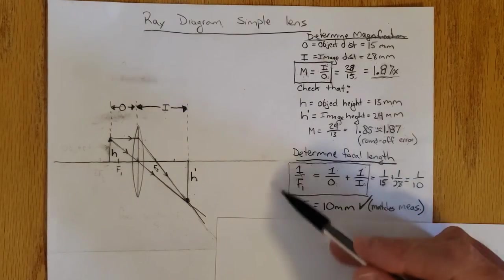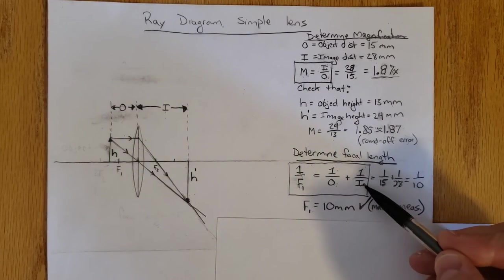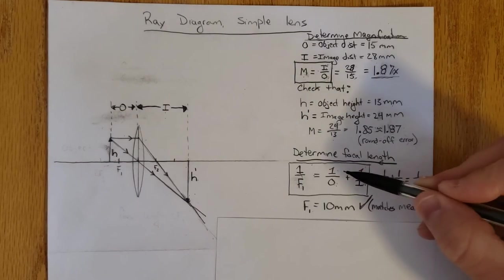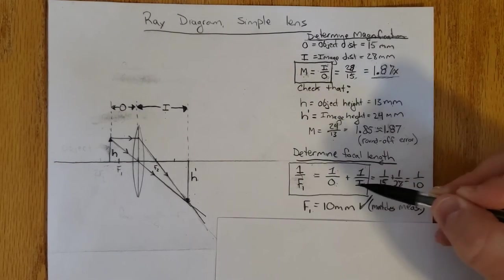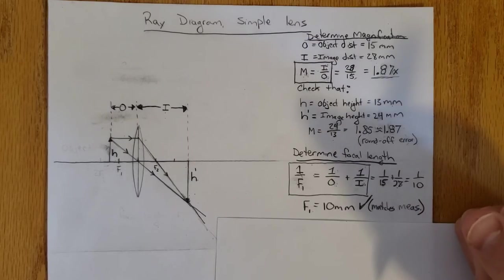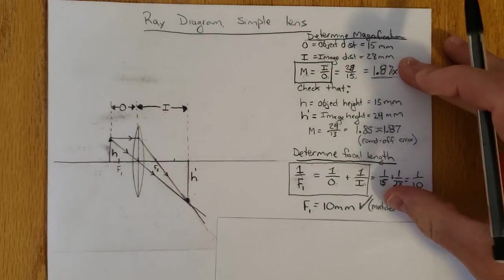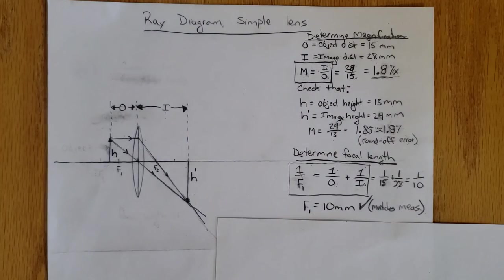That confirms that f1 equals 10 millimeters. I could have just rearranged this formula to solve for i without having to do this ray diagram, because I knew this was 1 over 10 and I knew this was 1 over 15, and I could have solved this for i. It would have given me the same answer. So I didn't need to draw the ray diagram. But now we see that the formulas agree with the ray diagram.